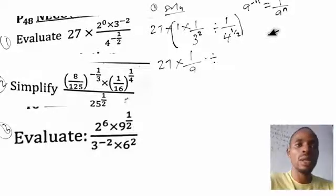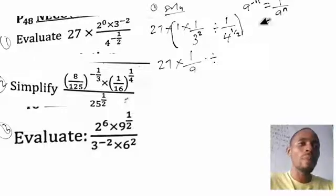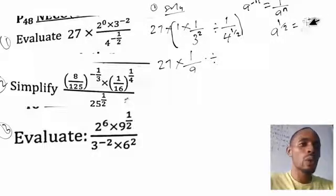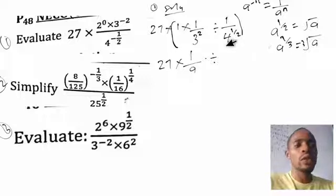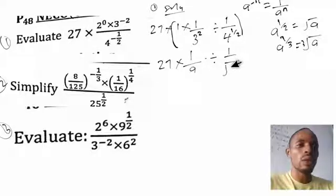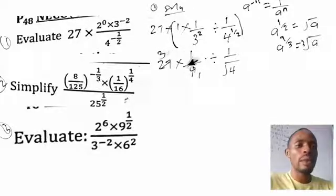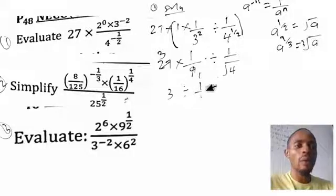So we have 27 times 1 over 9, divided by the square root of 4. Now let's solve the multiplication first: 27 divided by 9 gives us 3, and 3 times 1 is 3. Then divided by the square root of 4 — the square root of 4 is 2 — so we have 1 over 2. Now we have 3 divided by 1 over 2.